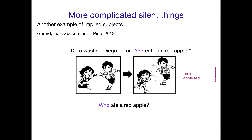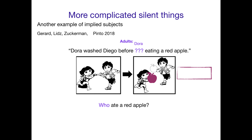So what do adults do? Well, adults all color Dora's apple red because they think Dora is the implied subject. 'Dora washed Diego before eating a red apple' — Dora's the one eating a red apple.